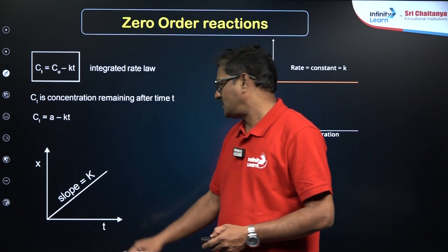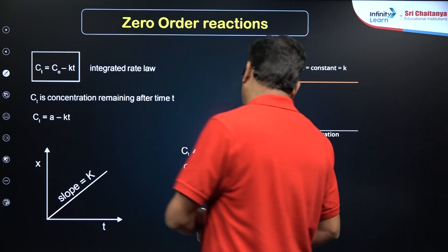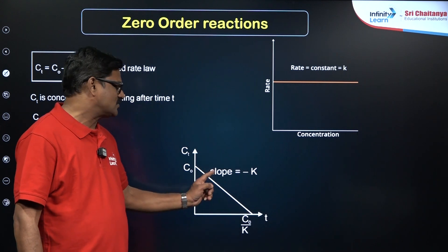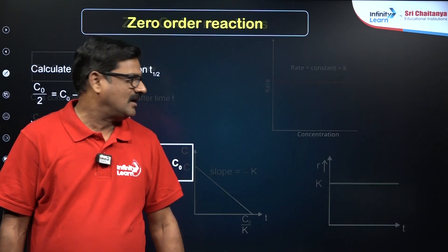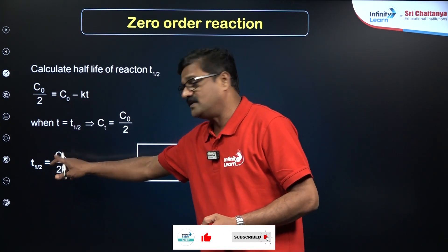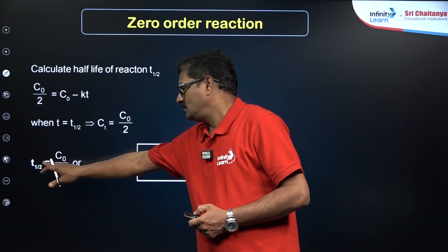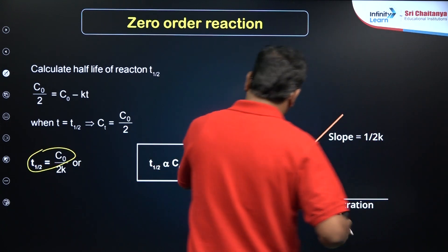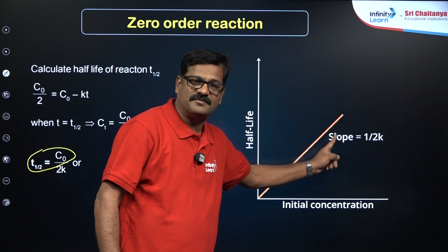For zero order: x (amount consumed) versus time is a straight line through the origin with slope k. Initial concentration versus time gives a negative slope of −k. Rate constant versus time is a parallel (horizontal) line. The half-life for zero order reaction is t½ = c₀/2k, so the half-life is directly proportional to the initial concentration. Therefore, the t½ versus initial concentration graph is a straight line through the origin with slope 1/2k.